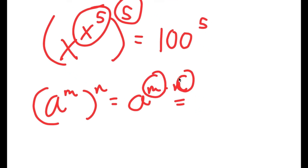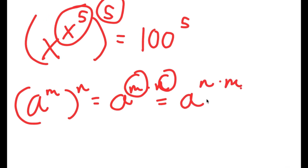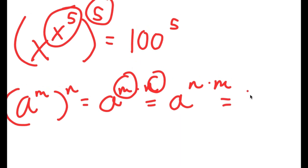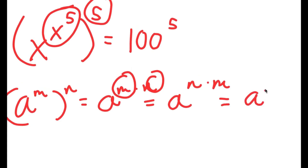And a to the power of m times n — these two are interchangeable, so this is the same thing as a to the power of n times m. If I have something in the form a to the power of m to the power of n, that equals a to the power of m times n, this means that a to the power of n times m should equal a to the power of n to the power of m.